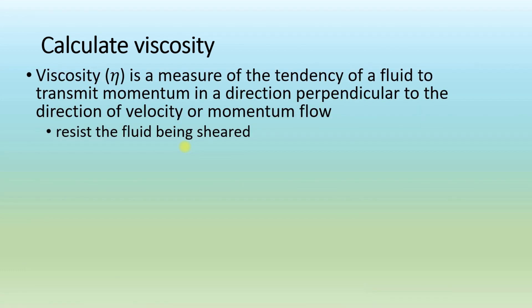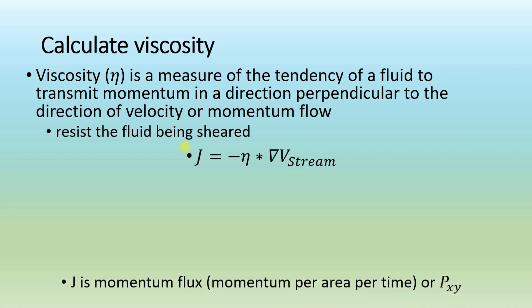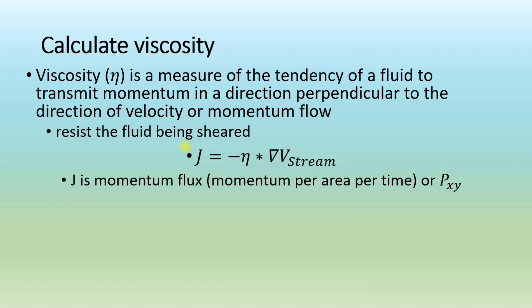What is viscosity? Viscosity (η) is a measure of the tendency of a fluid to transmit momentum in a direction perpendicular to the direction of velocity or momentum flow. Its formula is J = -η × ∇V_stream. Here J is the momentum flux (momentum per unit area per unit time) and ∇V_stream = ∂v_x/∂y. Rearranging gives η = -J/∇V_stream. That's how we will calculate viscosity: by calculating the momentum flux and the spatial gradient of the velocity flow from the LAMMPS script.